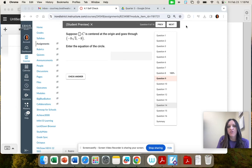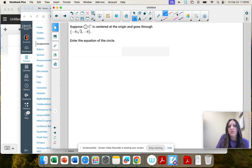Suppose circle C is centered at the origin and goes through that point. So if we're centered at the origin, the origin is 0, 0, and that's our center. So in our equation, that's our h, k.